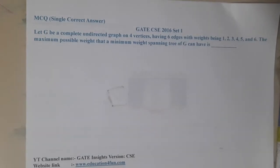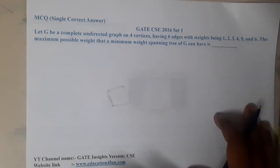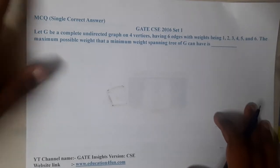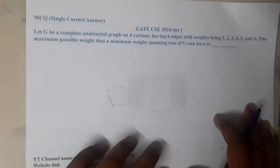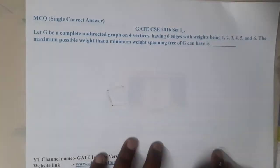Hello guys, we are back to the next lecture. In this lecture, let us go through the next question. This question belongs to GATE CSE 2016 Set 1. The question is: let G be a complete undirected graph of four vertices.